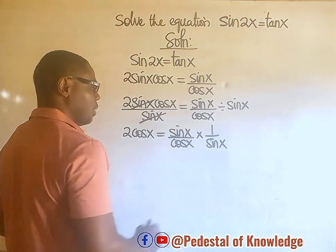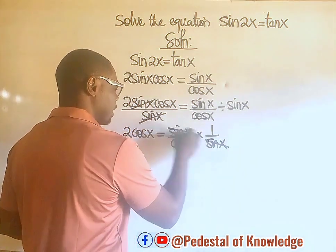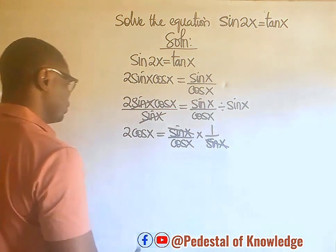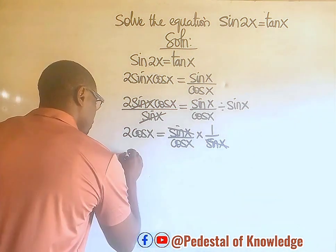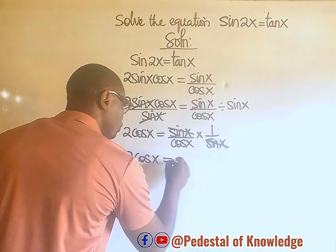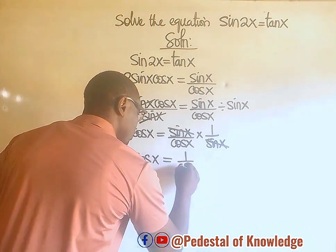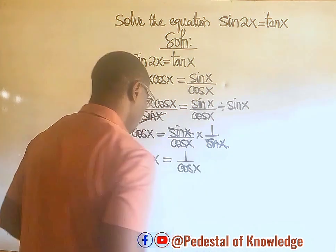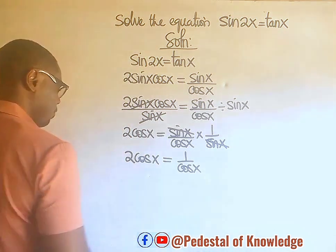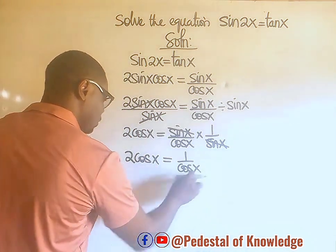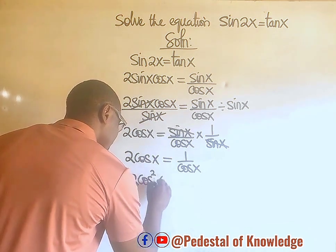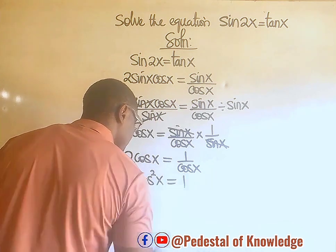Now, this sine x cancels sine x, so we are left with 1 over cos x on the right-hand side of the equation. So we have 2 cos x is equal to 1 over cos x. When we cross-multiply, we get 2 cos x times cos x, which gives us 2 cos squared x is equal to 1.